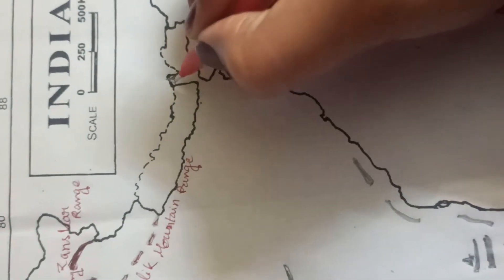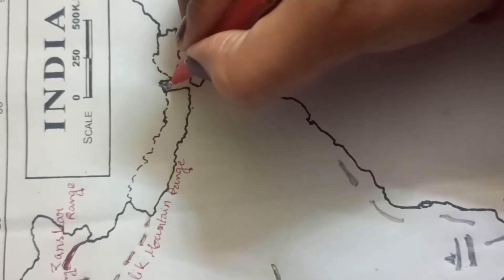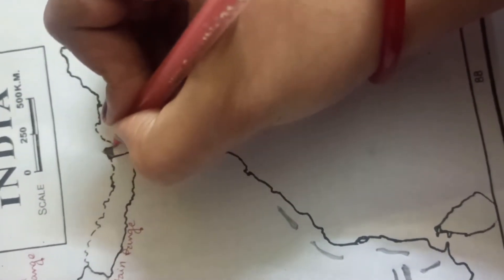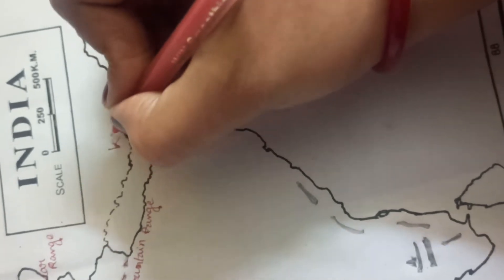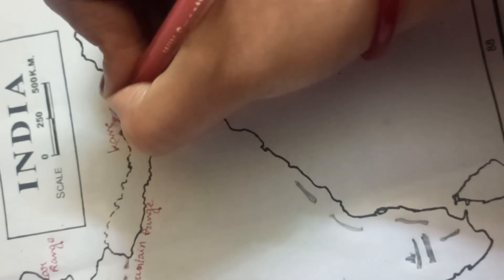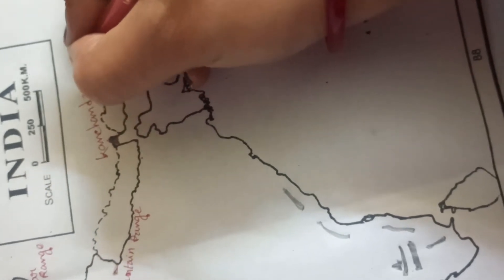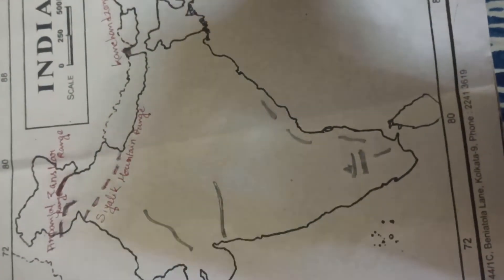Here you can see this mountain peak. This is known as, do the triangle shape. This is Kanchanjunga. Okay. This is the second most highest peak in India.